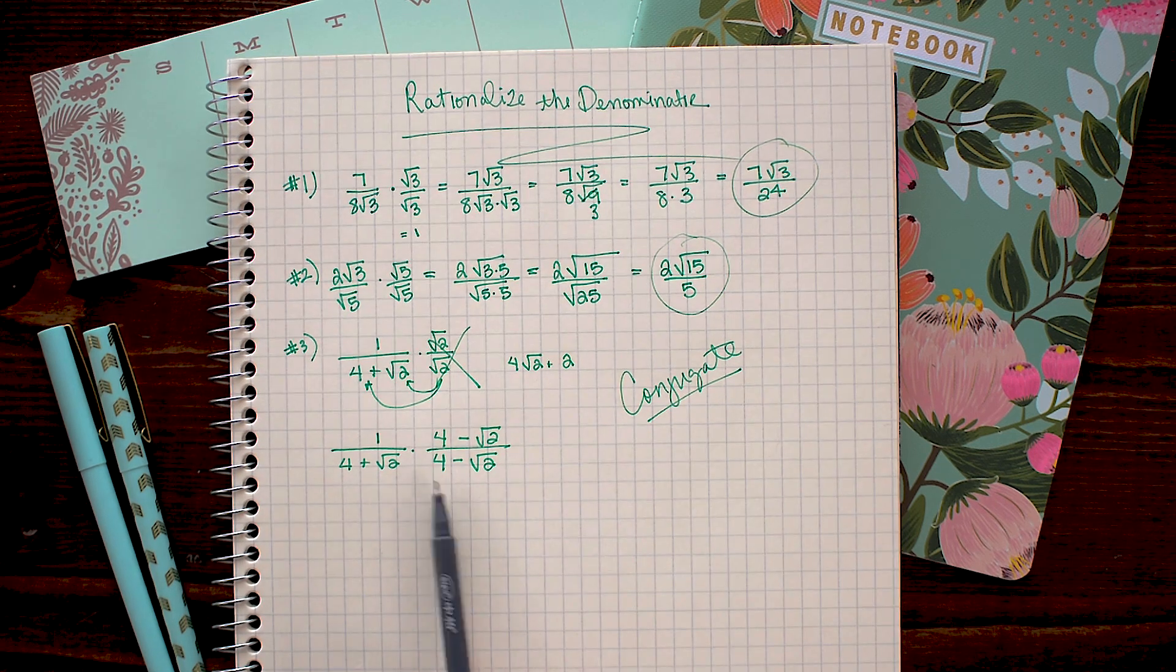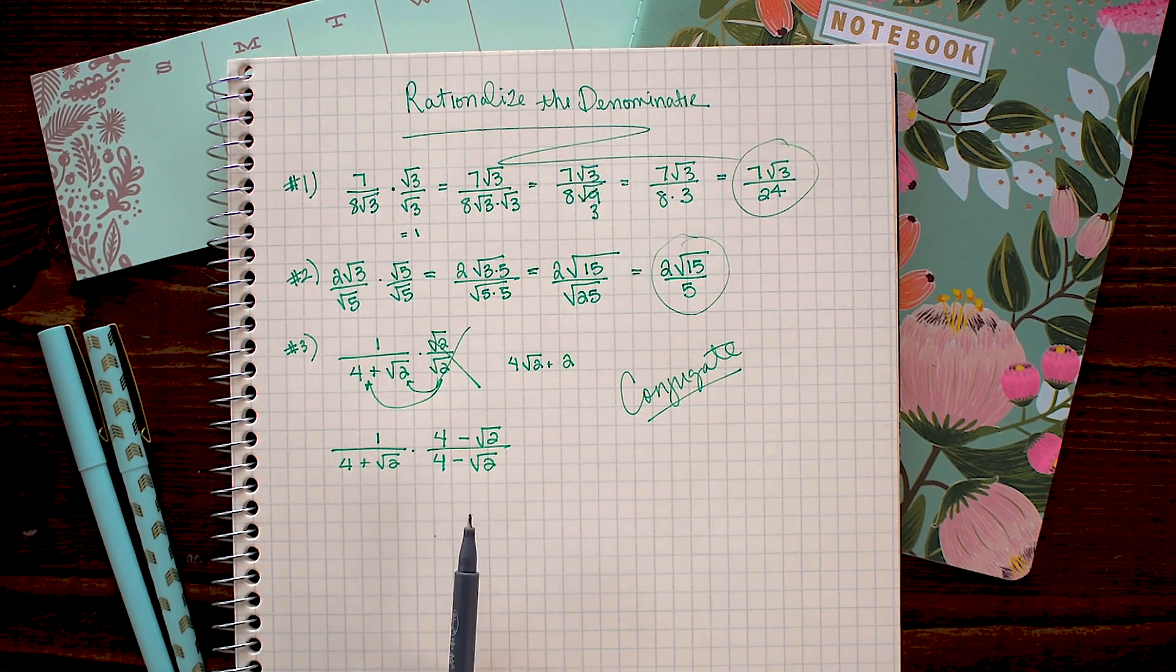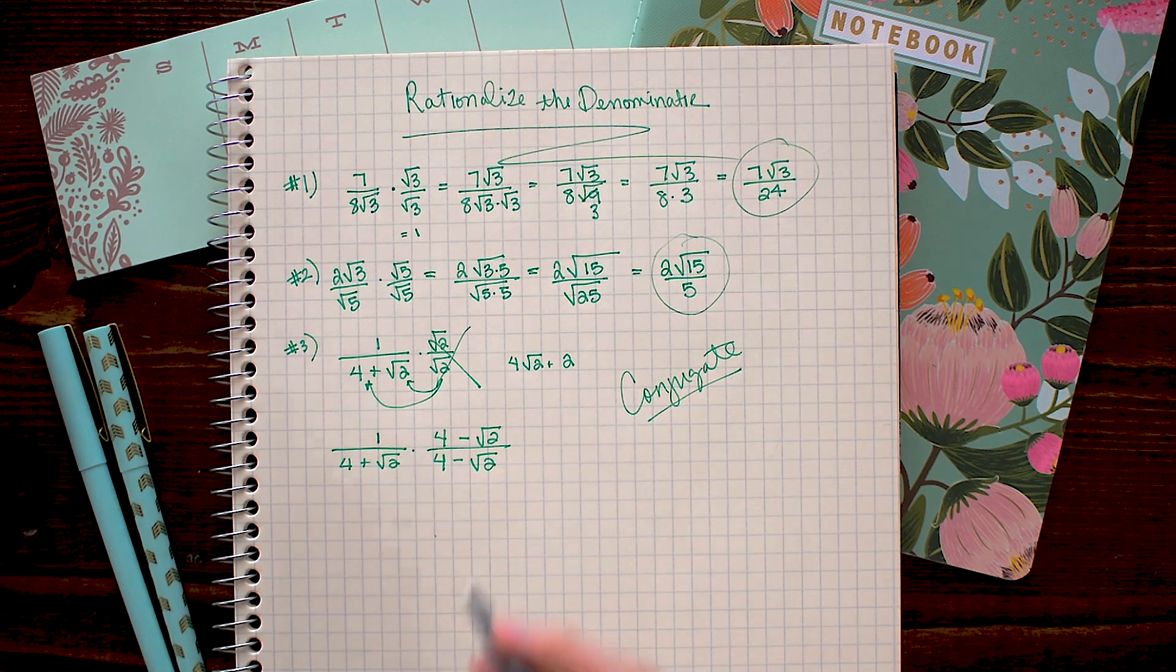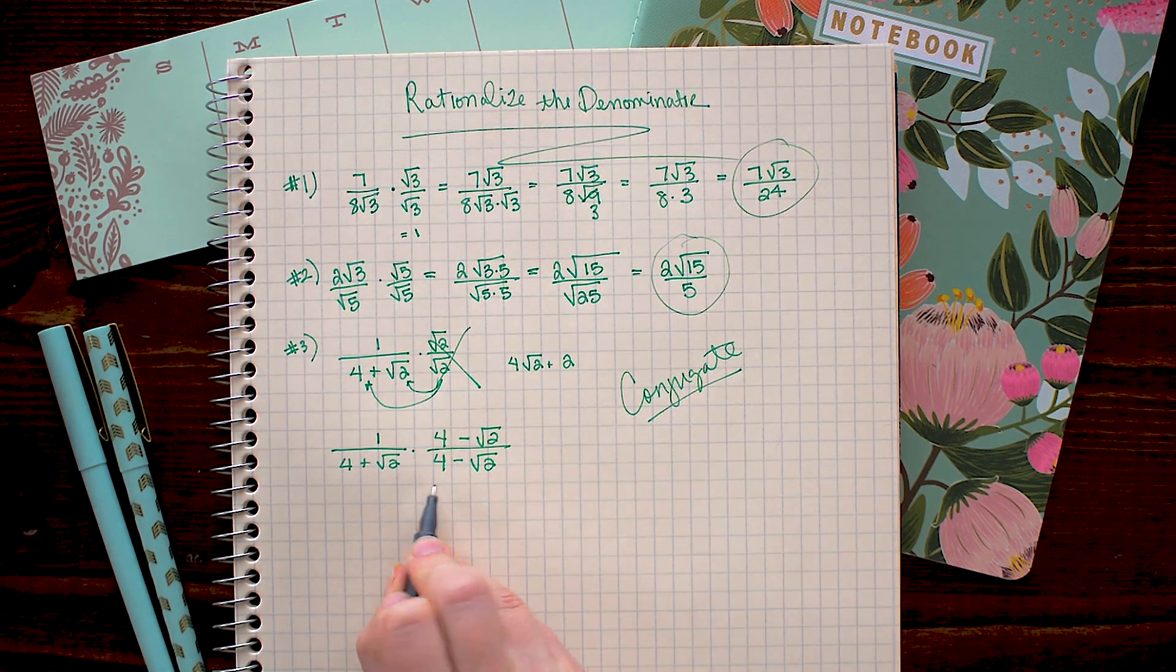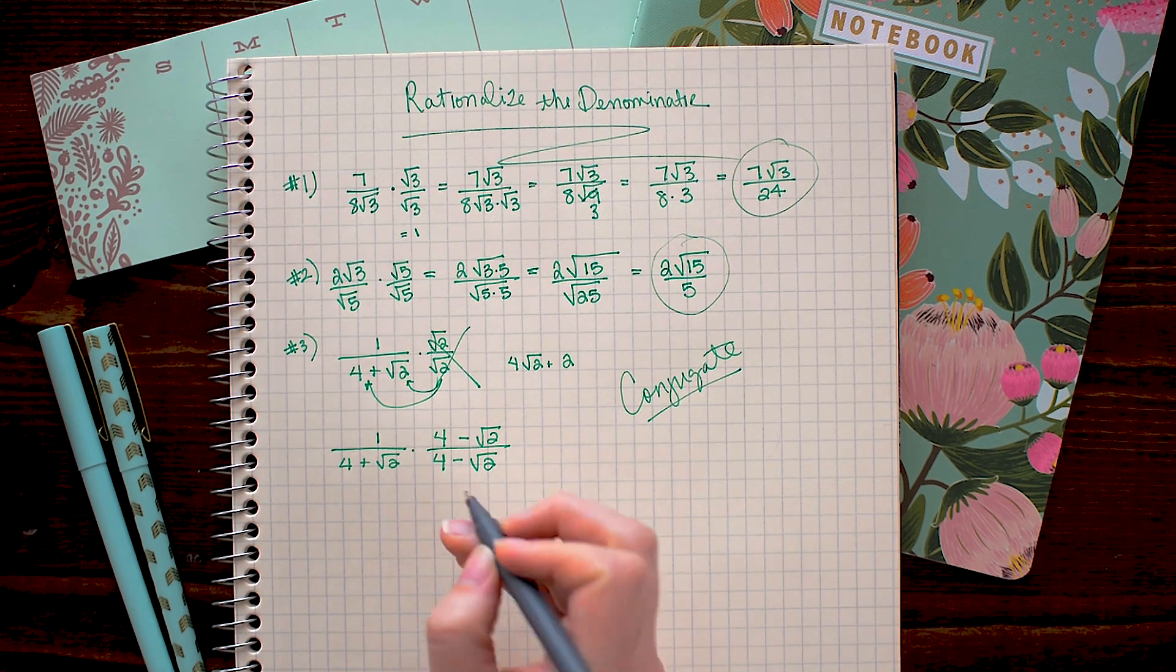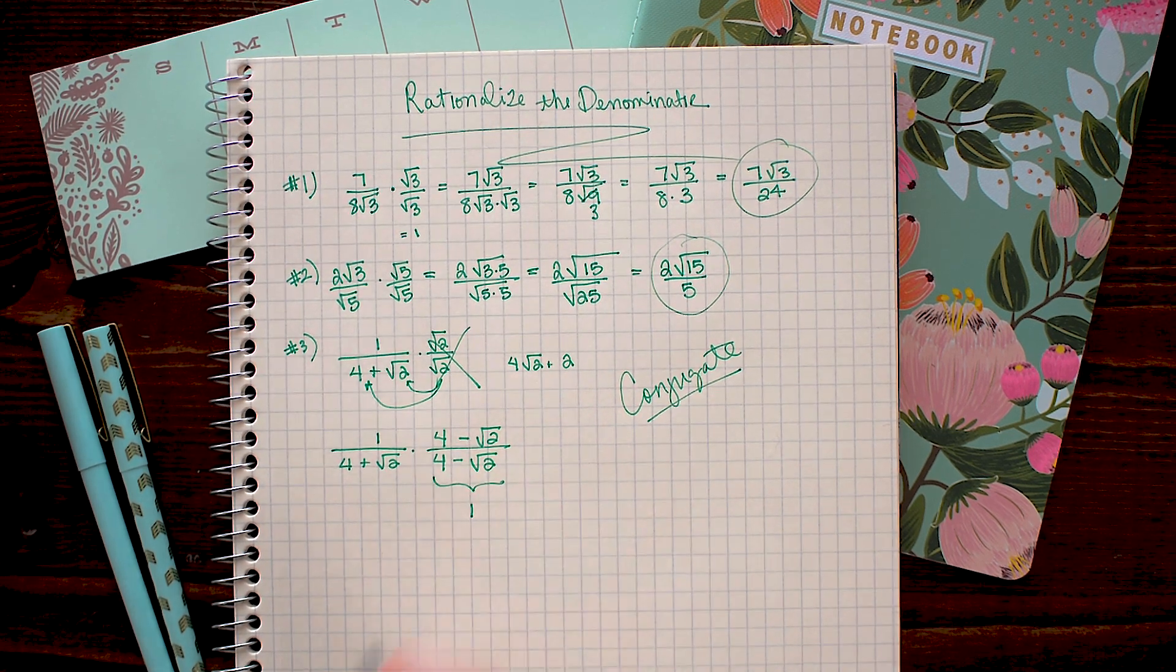Here, once again, I'm following the rule that I have to multiply by a form of 1, so I don't alter the equation. And of course, anything over itself, even if it's kind of nasty like this, is still equal to 1.